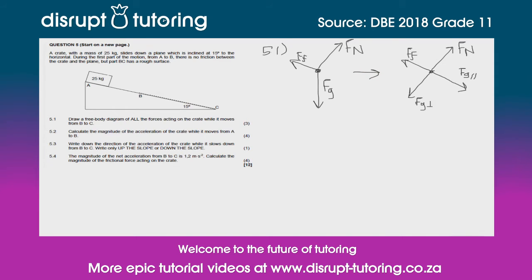So 5.2 says calculate the magnitude of the acceleration of the crate while it moves from A to B. A to B is the non-frictional part. Let's start with a simple Newton's second law equation, and that is your F net or F resultant is equal to mass times acceleration.